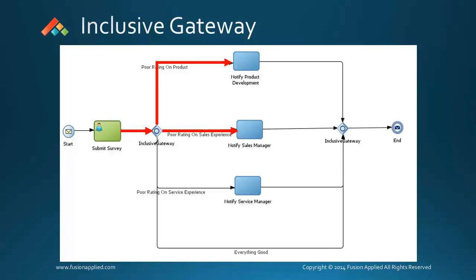The process token can flow down more than one path depending on how the conditions get evaluated. Tokens are joined at the merge of the inclusive gateway.